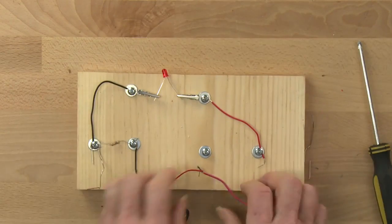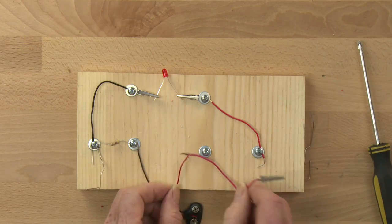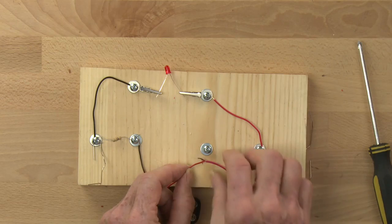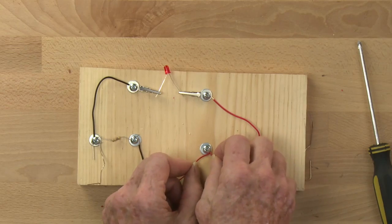The light emitting diode has a long leg and a short leg, and the long leg should definitely go to the positive red lead from the battery.